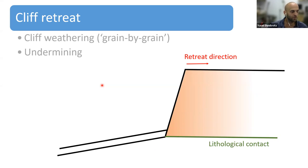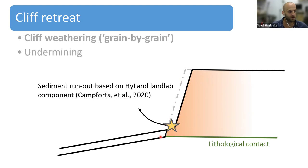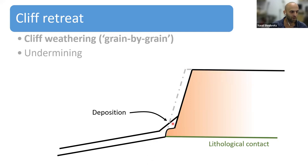The next process that we invest much effort to represent is cliff retreat. Here we include two types of retreating. The first is cliff weathering — what we call grain-by-grain weathering. This process acts on all cliff sections not covered by sediment. All exposed cliff sections experience weathering in a parallel way. We then determine the critical node following the concept of the highland component of Benjamin Campforts. All sediment eroded above this critical node is run out using the highland component — run-out of Bridgeton — so it is mobilized in a kind of landslide-like way, deposited beneath the slope, and forms a talus slope.